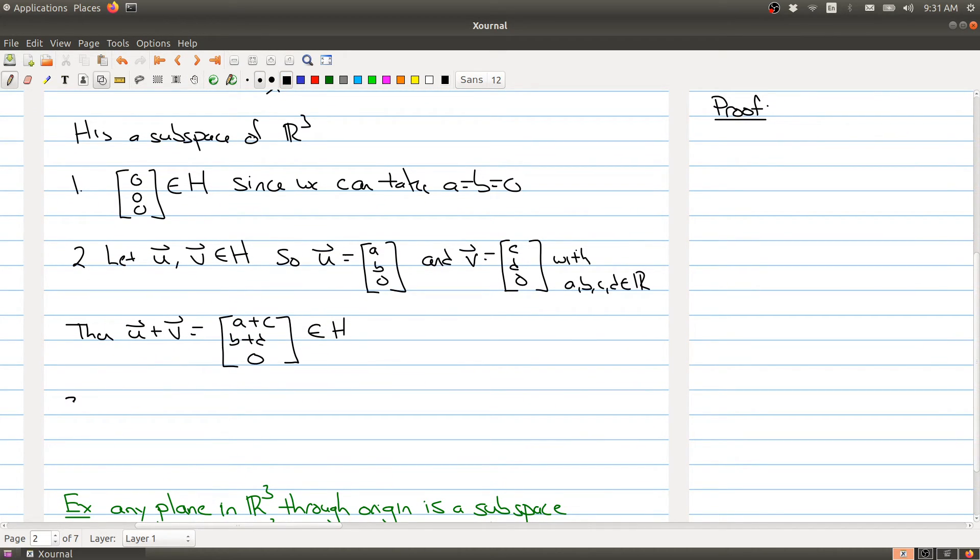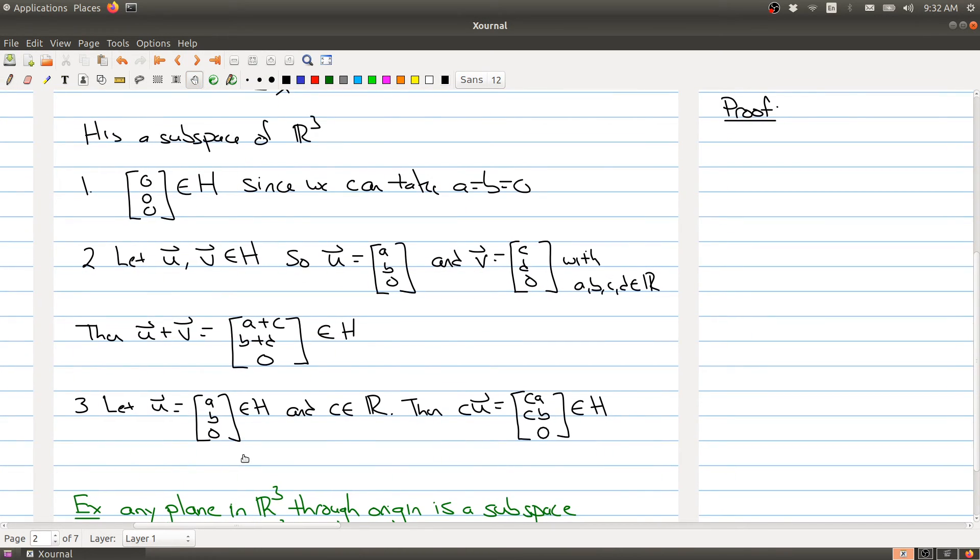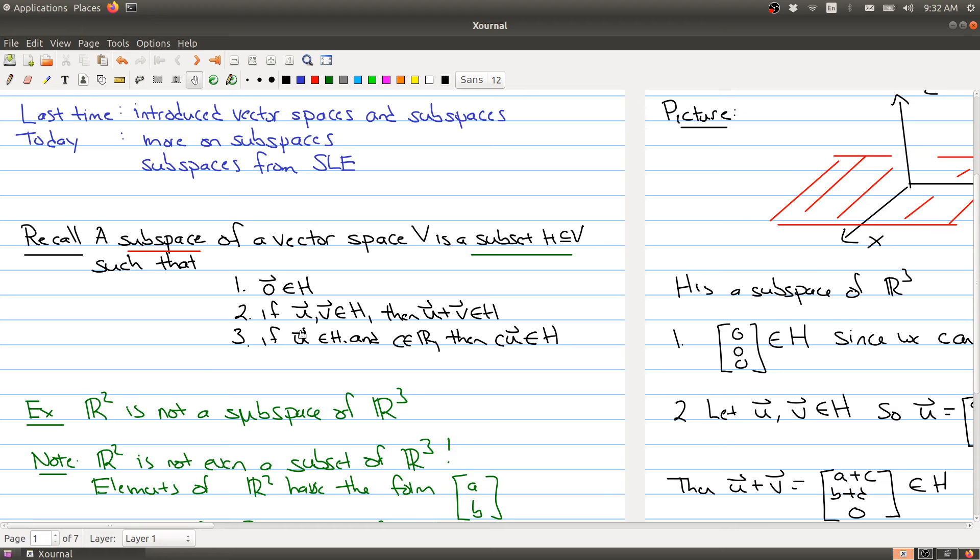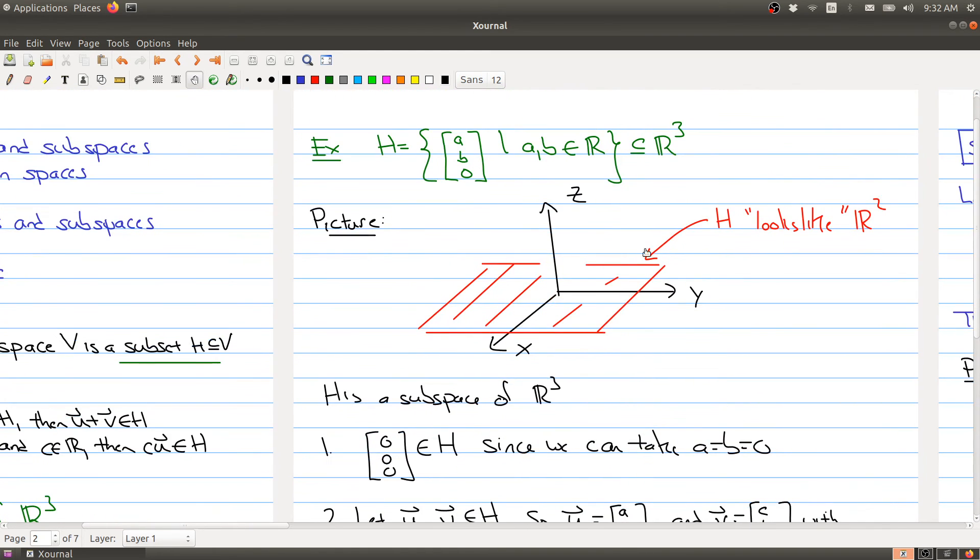The third statement is proved similarly. So let U be any vector inside of H, and let's take a C in the real numbers. Then C times U is equal to [CA, CB, zero]. And again, that gives me something in H. So I've now checked all the three conditions of being a subspace. The zero vector is in H, the sum of two vectors is in H, and the vector scaled by C is also in H.